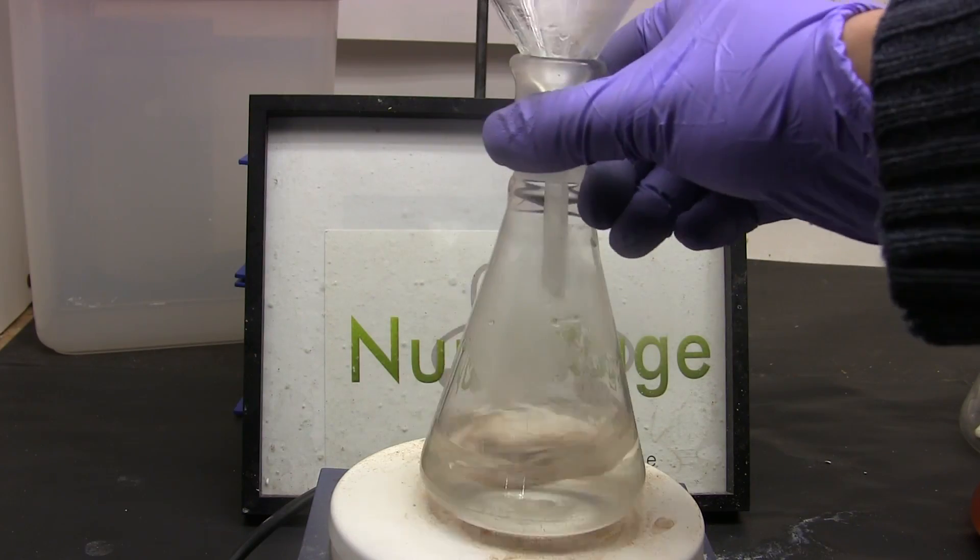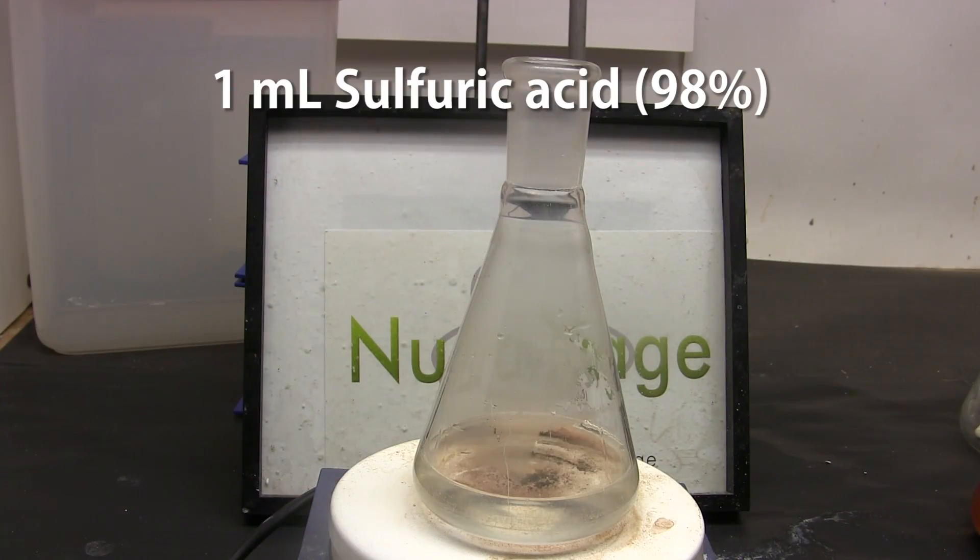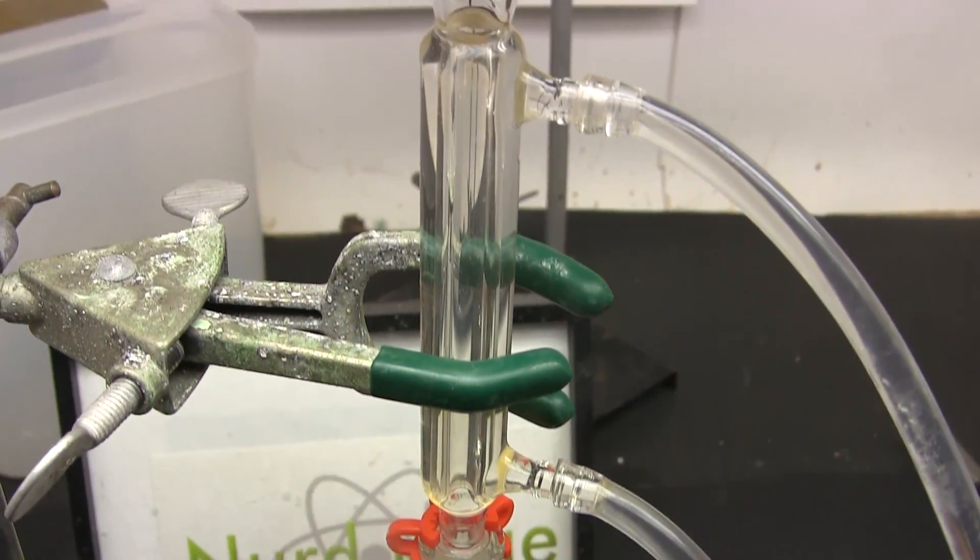Finally we need an acid catalyst and we'll use 1 mL of concentrated sulfuric acid. Now we set up a reflux apparatus on top of the flask.